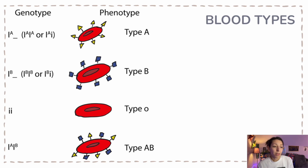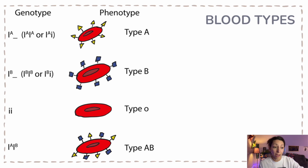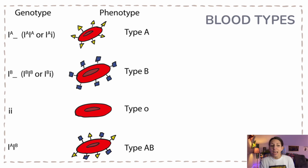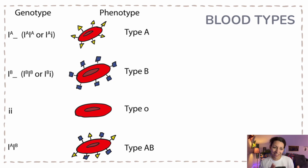Blood types are controlled by several different alleles — something called multiple alleles. It's not just A or B; we can have the allele for blood type A, the allele for blood type B, or the allele for blood type O, so that's three different alleles. A genotype is two alleles together, giving lots of different possible combinations. AB blood is actually a co-dominant genotype — if someone has the allele for type A and the allele for type B, they will express antigens for both. Type O is actually recessive, but A and B are co-dominant. There's also the RH factor and lots of different things we can talk about with blood types and donor compatibility.